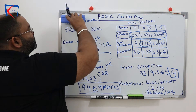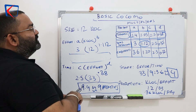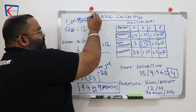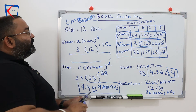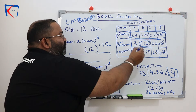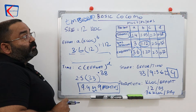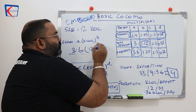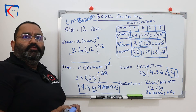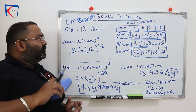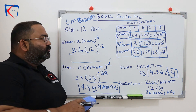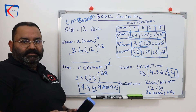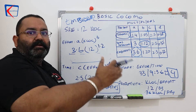Similarly, if the project is embedded, A becomes 3.6 and B becomes 1.20, and so on for the other calculations. For your reference, I have calculated the effort, time, staff, and productivity for all three project categories and put them in a table.